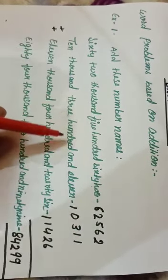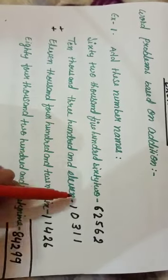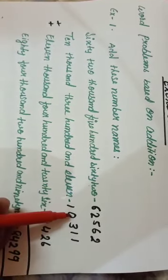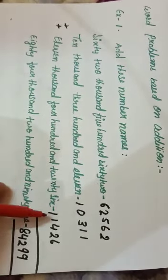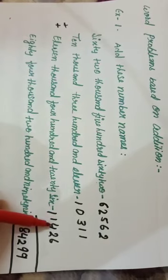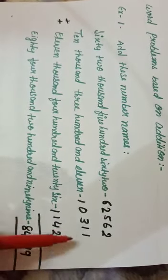Then 10,311 and 11, you have to write 10311. Then 11,426, write 11426. Then you add it like that.